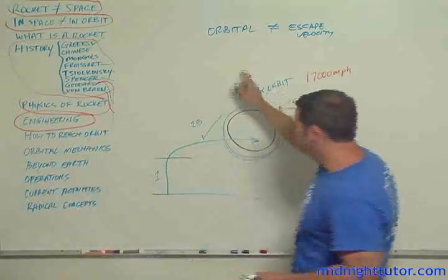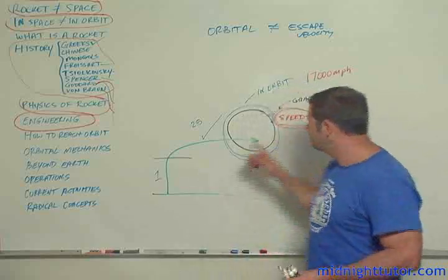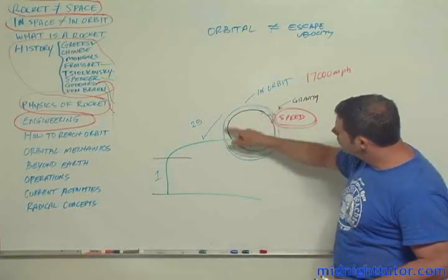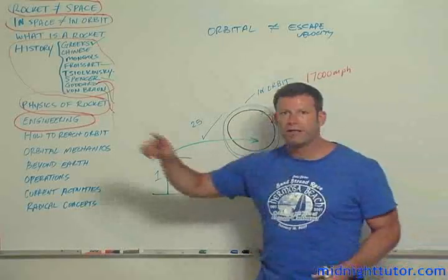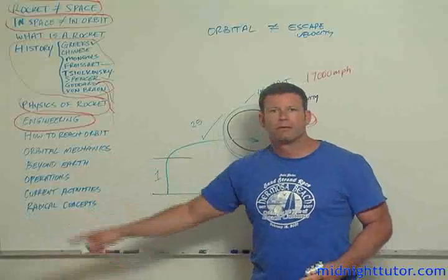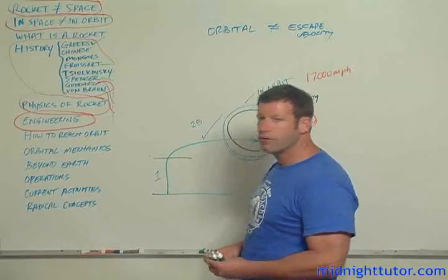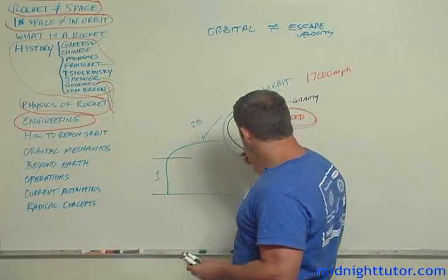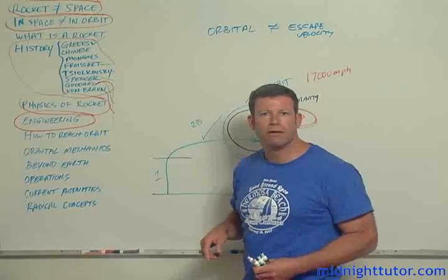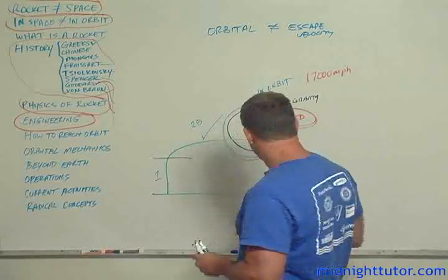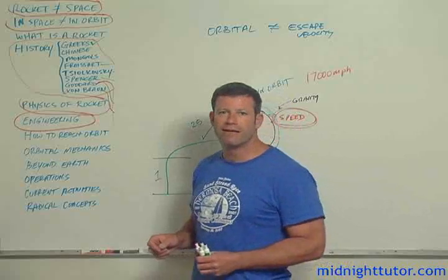Whereas to reach orbit, you only merely have to accelerate to 17,000 miles per hour in order to achieve a rate of falling that corresponds to the curvature of the Earth. If the Earth were square, then you'd have to go faster to get around the corners. So, a little attempt at rocket science humor.